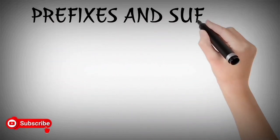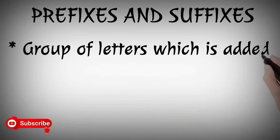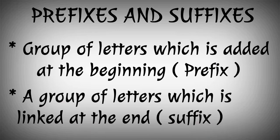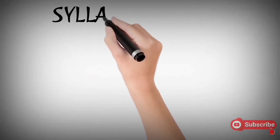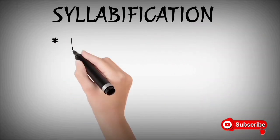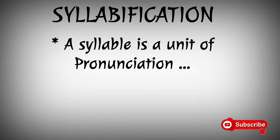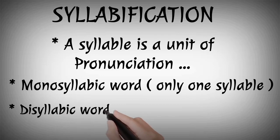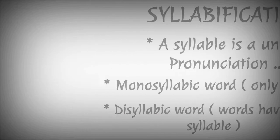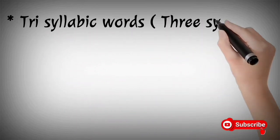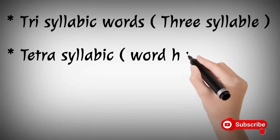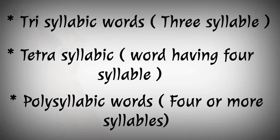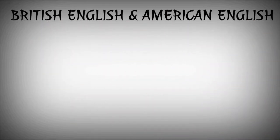The next topic is prefix and suffix. In a group of letters, we can add a prefix at the beginning and a suffix at the end. Next, syllabification: the syllable is a unit of pronunciation. There is monosyllabic (one syllable), disyllabic (two syllables), three syllables, and four syllables.